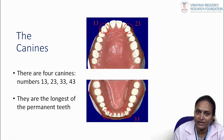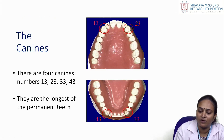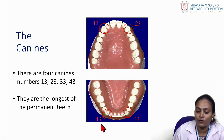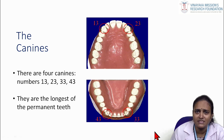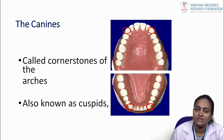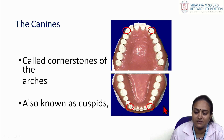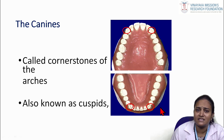There are four canines; their FDI numbers are 1-3, 2-3, 4-3, and 3-3. They are the longest permanent teeth in the oral cavity. Canines are called the cornerstones of the arch, arranged at the corners of the teeth, and they give aesthetic appearance to the face.